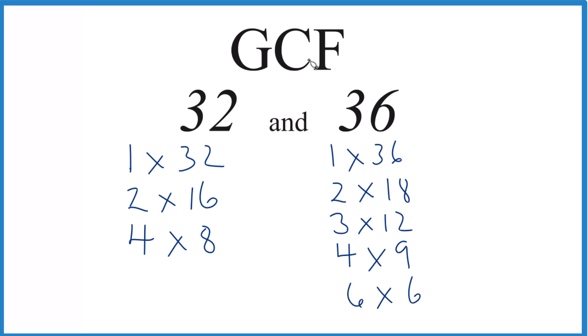So we have the factors, just need to find the common factors and then choose the greatest. So 1 goes into 32 and 36 evenly. So does 2, 4, and is there anything else? Nope. So 4, that's the greatest common factor.